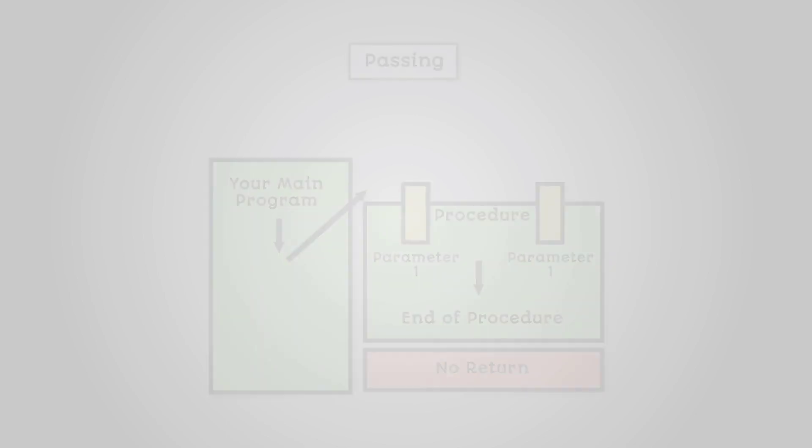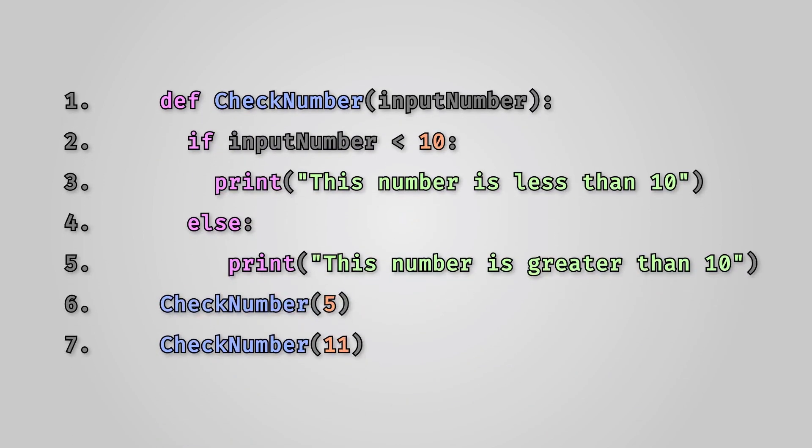Let's look at a simple procedure that takes a number and if it is less than 10 prints out this number is less than 10. Otherwise it prints out this number is greater than 10.